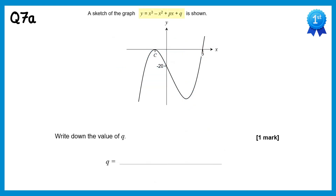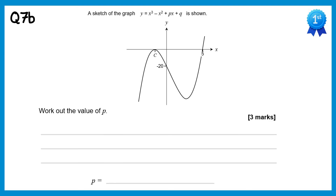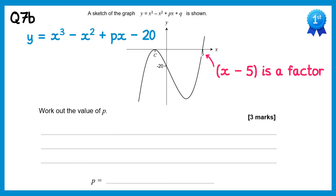Here we have the equation of a graph along with the sketch of it. We're asked to find the value of q. If you substitute x equals 0 into this, all of the terms with x will disappear, so we're just left with y equals q. Now when x equals 0 we're on the y axis, and this graph crosses the y axis at negative 20. Therefore q must be negative 20. We now have the graph with q updated to negative 20, and we need to find the value of p. Notice the graph crosses the x axis at 5. This means if you substitute 5 in you'll get 0 out, and by the factor theorem x minus 5 must be a factor.